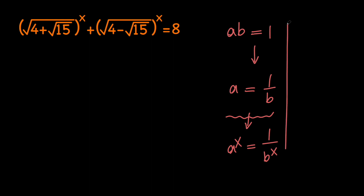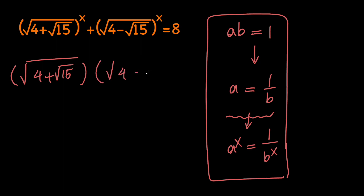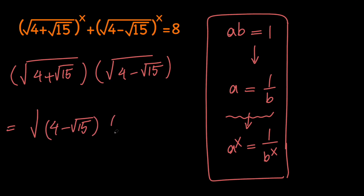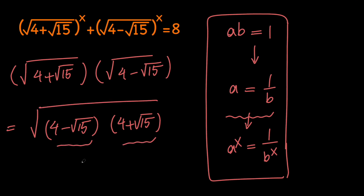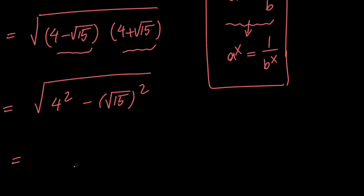So let's use this to solve our equation. We need to multiply the square root of (4 plus root 15) by the square root of (4 minus root 15). These are conjugates, so by the difference of two squares we get the square root of (4 squared minus root 15 squared), which equals the square root of 16 minus 15, which is the square root of 1.